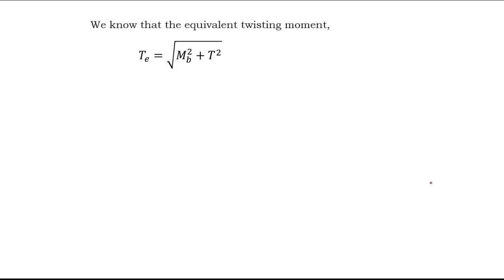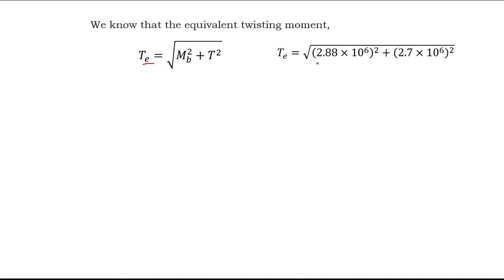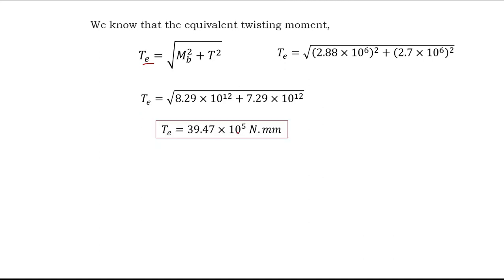Now we find the equivalent twisting moment. Since the shaft has both bending moment and twisting moment, we use the equation: equivalent twisting moment Te equals under root of (bending moment squared plus torque squared), that is sqrt(MB² + T²). Putting in the calculated values of bending moment and torque, we get the equivalent twisting moment Te equal to 59.47 into 10 to the power 5 N·mm.